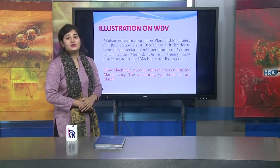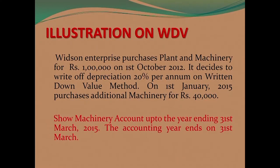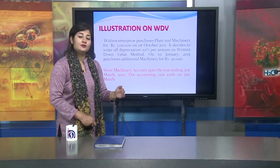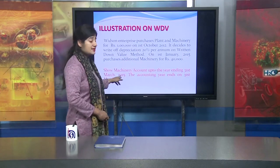Now, with the help of an example, we will understand this. Visiting Enterprises purchased plant and machinery worth 1,00,000 rupees on 1st October 2012 — note this date carefully, as the period from when the machine was purchased is important. It was decided to charge depreciation at 20 percent per annum on the Written Down Value Method. On 1st January 2015, additional machinery was purchased for 40,000. We have to show the machinery account up to the year ending 31st March 2015, with the accounting year ending on 31st March.